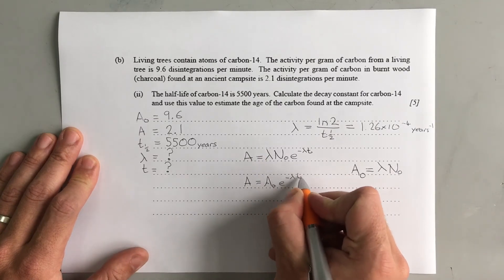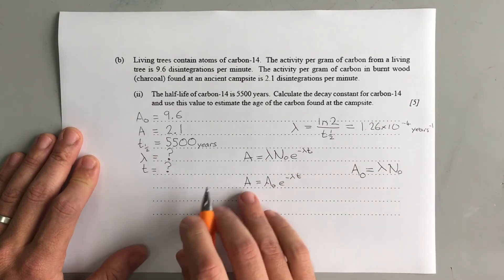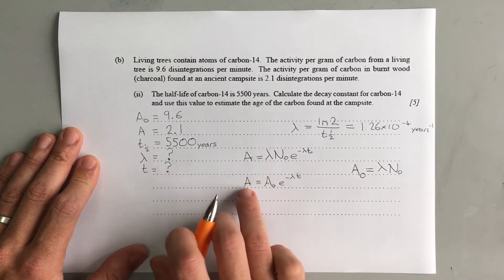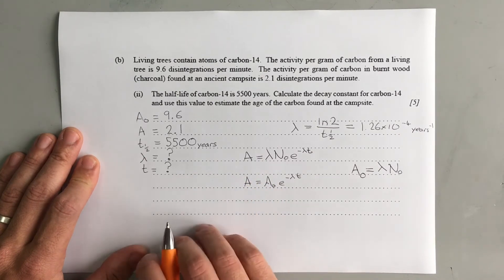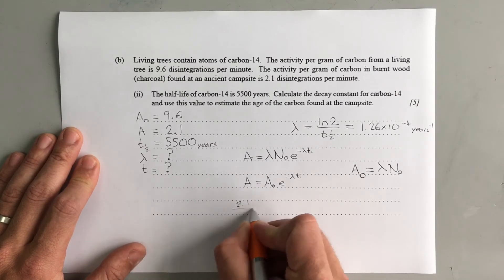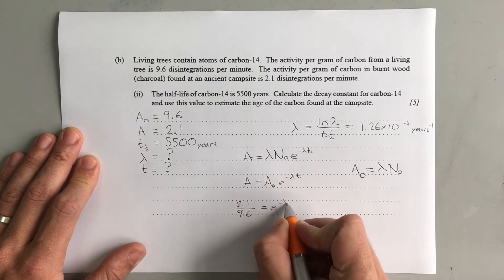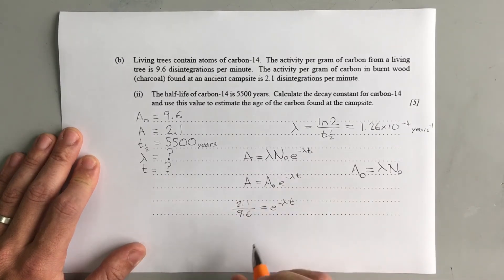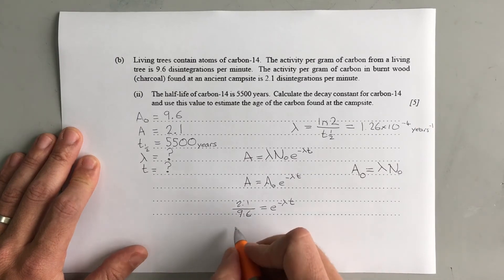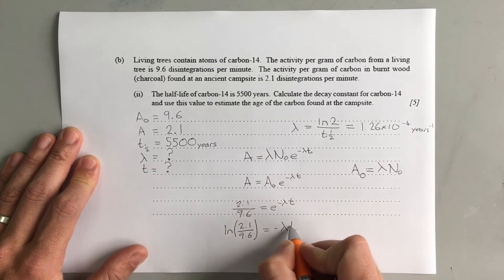Now this is where the units start to come in. So if we do A over A₀, that's just a ratio, so it doesn't matter what units they're in as long as they're in the same units. We can use whatever we want. So here on this side, we're going to have 2.1 divided by 9.6 equals e^(-λt). We can take natural logs of both sides, so then we end up with ln(2.1/9.6) = -λt.